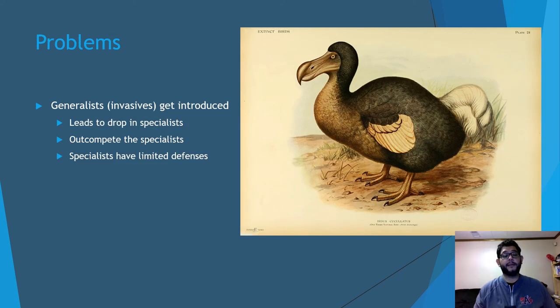Now this ends up leading to problems. You can have generalist species that are really good at doing very well in any habitat. They can become invasive. They'll come in and they'll beat out those specialist species, and that will lead to competition that the specialists are just not able to keep up with.